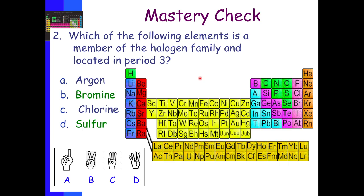Which of the following elements is a member of the halogen family and located in period 3? A, argon. B, bromine. C, chlorine. D, sulfur.